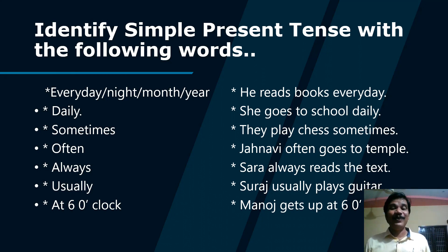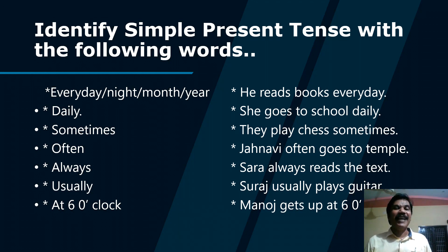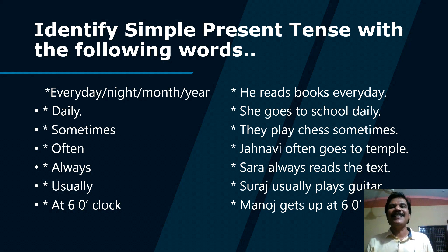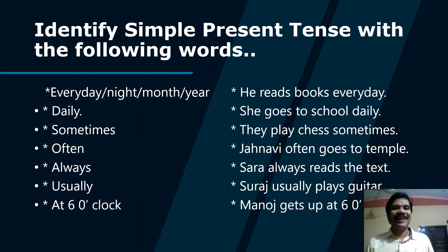Here is a tip on how to identify simple present tense in examinations. If you see time expressions like 'every day,' 'every night,' 'every month,' 'every year,' 'daily,' 'sometimes,' 'often,' 'always,' or 'usually,' immediately fill the blank with simple present tense — that is V1. For example: 'He reads books every day,' 'She goes to school daily,' 'Jahnavi often goes to temple,' 'Suraj usually plays guitar at six o'clock.'